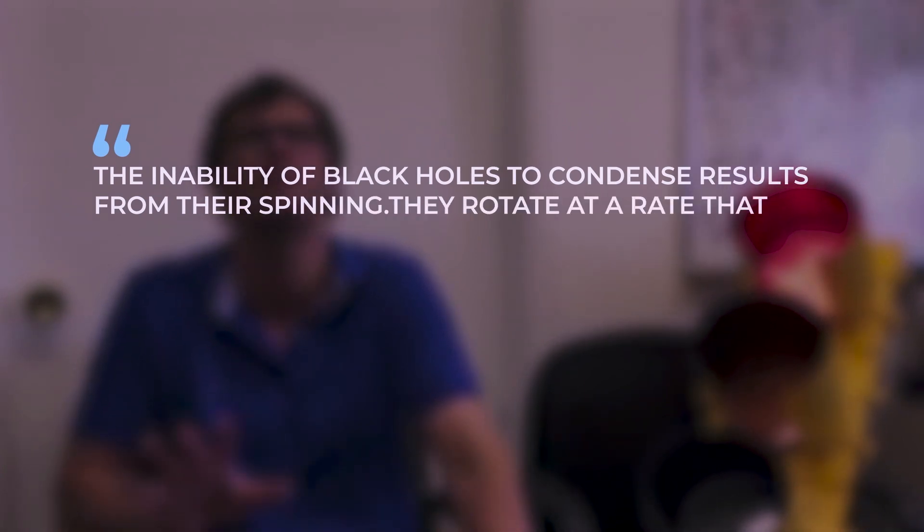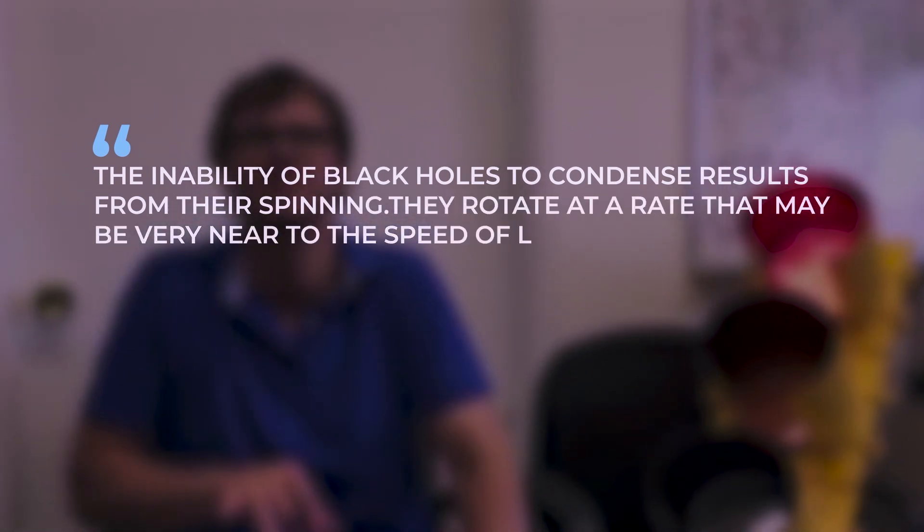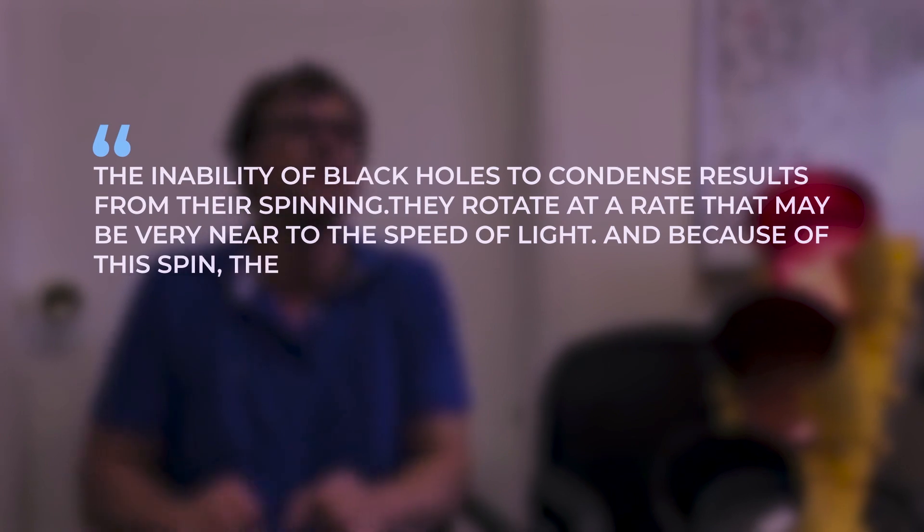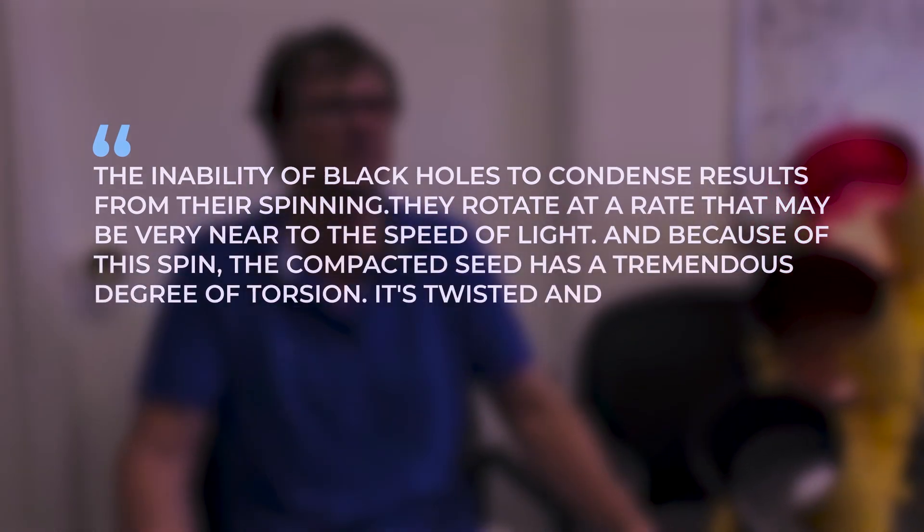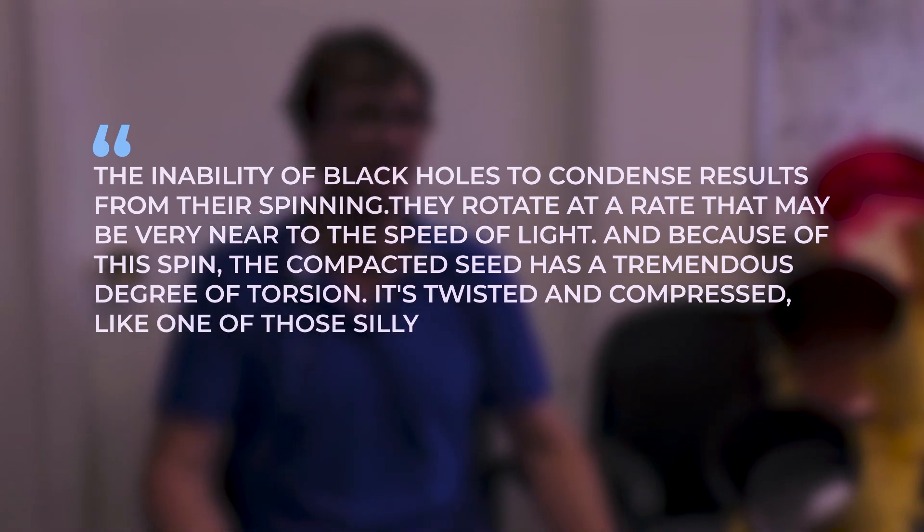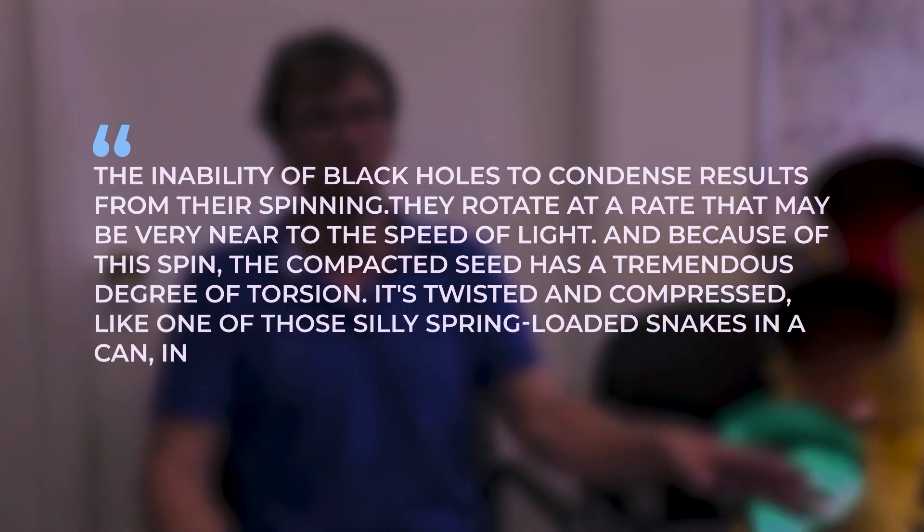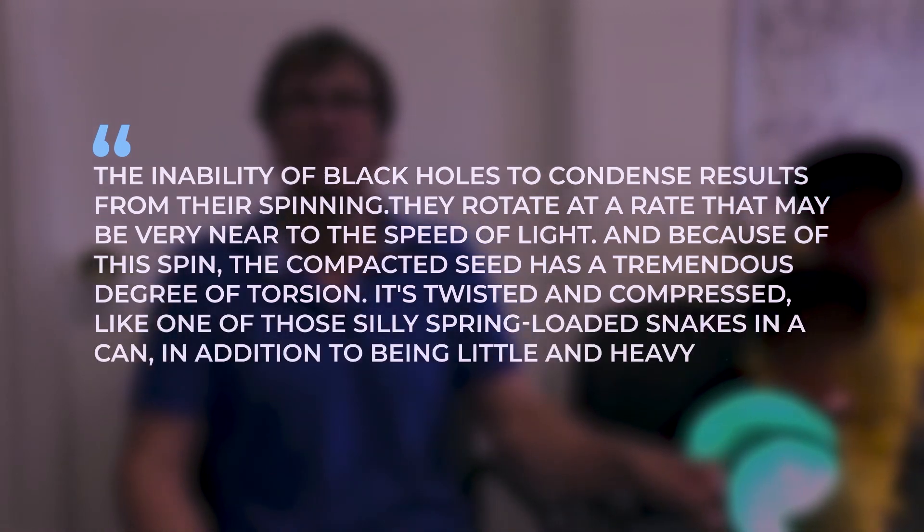Dr. Popolovsky claims that the inability of black holes to condense results from their spinning; they rotate at a rate that may be near to the speed of light. And because of this spin, the compacted seed has a tremendous degree of torsion. It's twisted and compressed, like one of those silly spring-loaded snakes in a can, in addition to being little and heavy, which can suddenly spring with a bang.